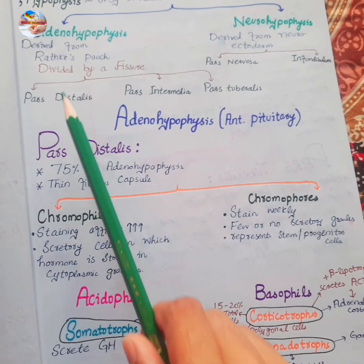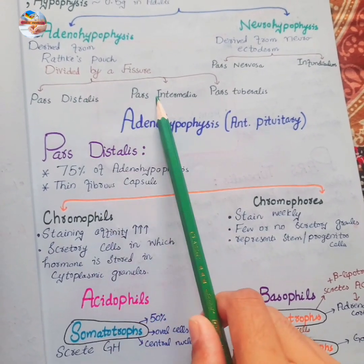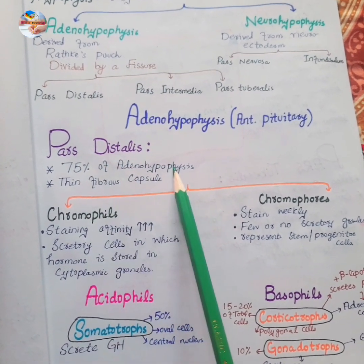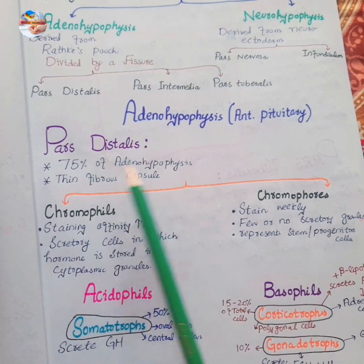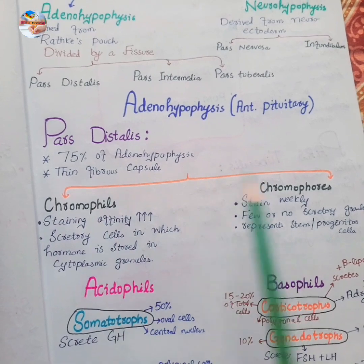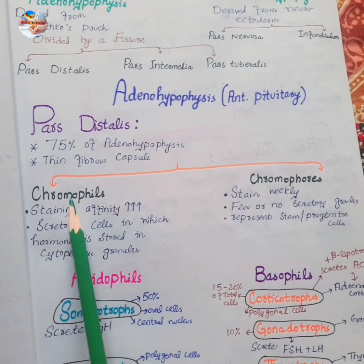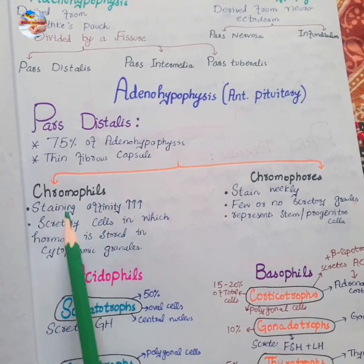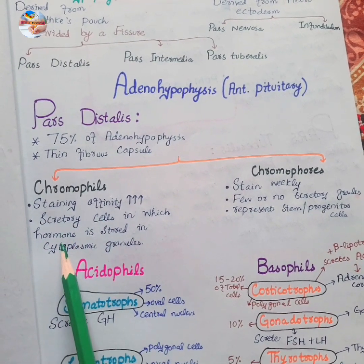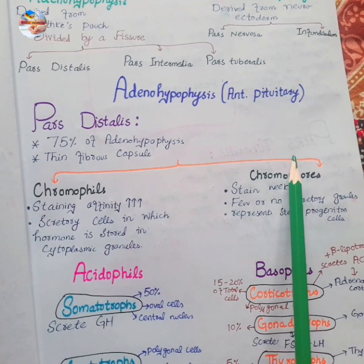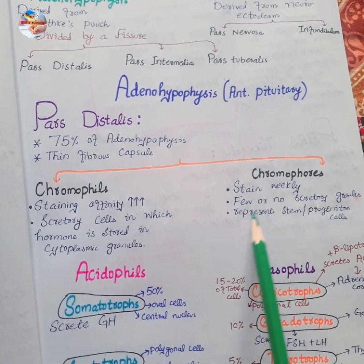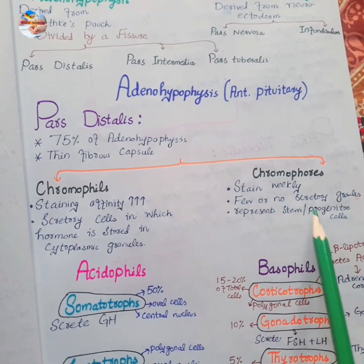The pars distalis forms about 75% of the adenohypophysis. It is covered by a thin fibrous capsule and has two major types of cells: chromophils and chromophobes. Chromophils have higher staining affinity because they are secretory cells with cytoplasmic granules in which hormones are stored. Chromophobes stain very weakly, have few or no secretory granules, and represent stem or progenitor cells.